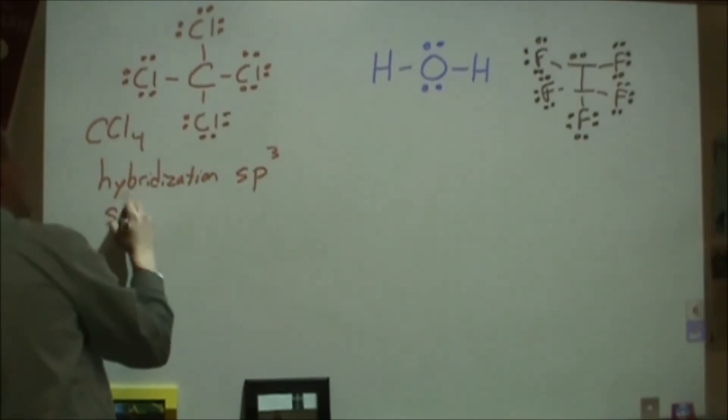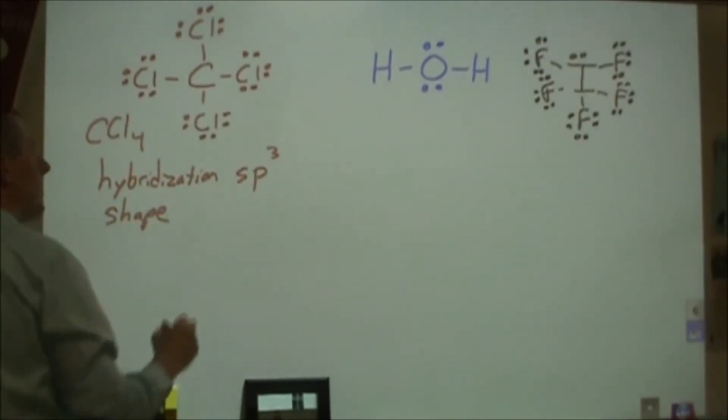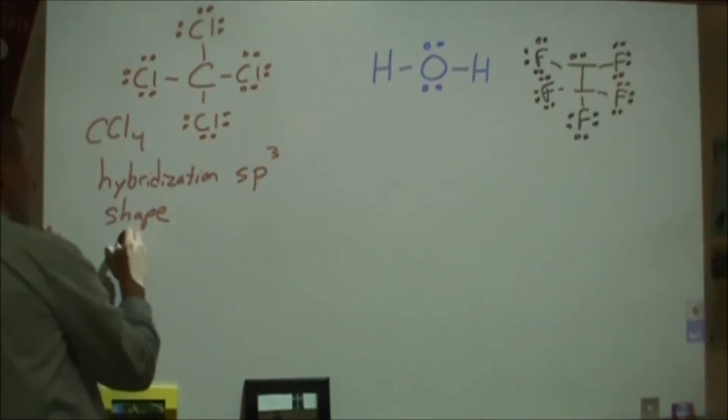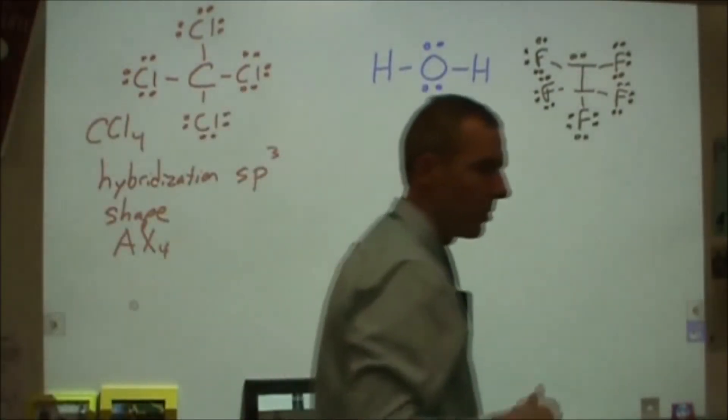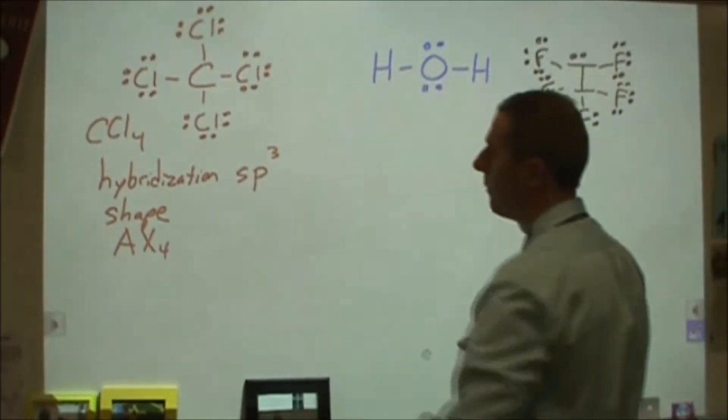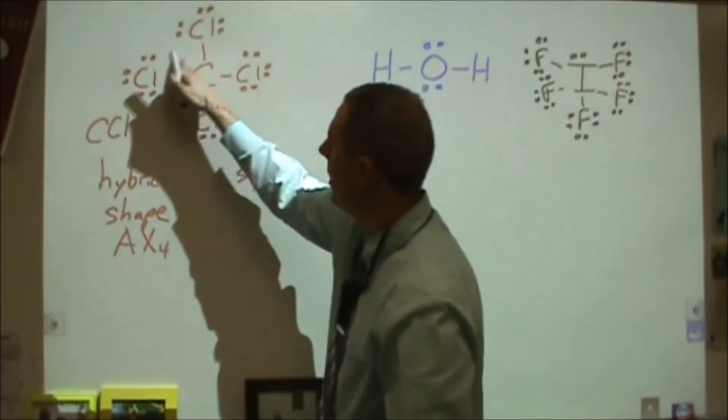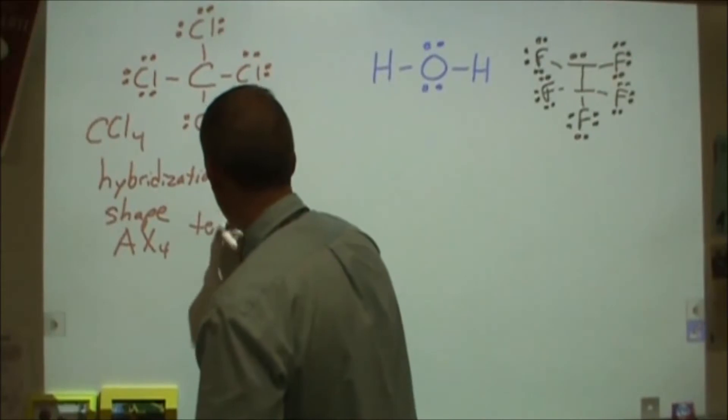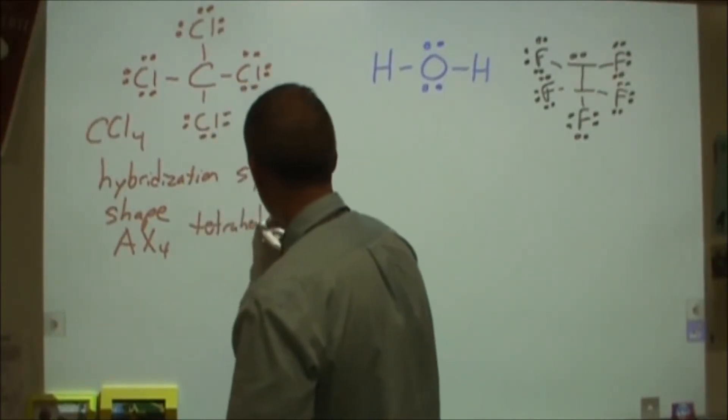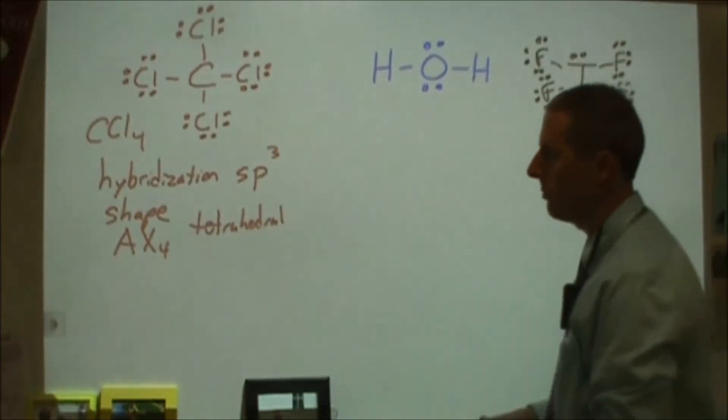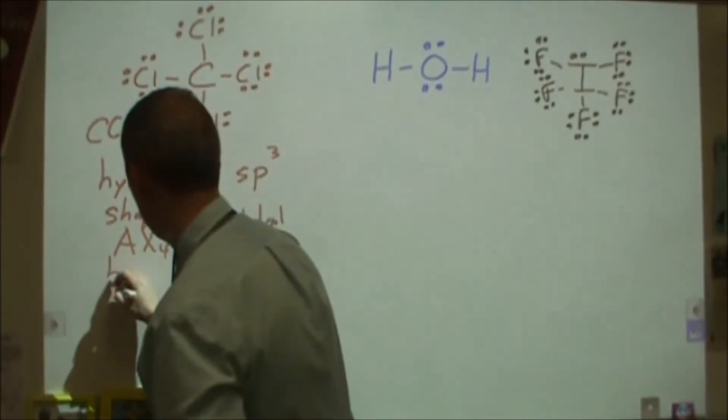The second thing you can tell from this is what the shape of the molecule is. In this one, I have four things attached to a central atom, and you may have seen something to the effect of an AX configuration where you're looking at X being the number of things attached, and then E's being the number of lone pairs on the central atom. There are no lone pairs on the carbon here. So this is going to be a tetrahedral shape, and any time you have four things attached to a central atom and no lone pairs, you'll have a tetrahedral shape.